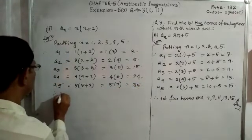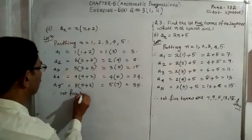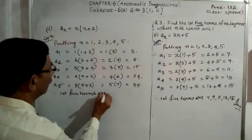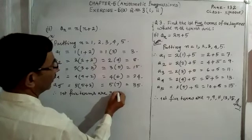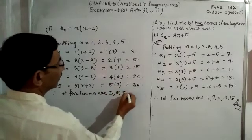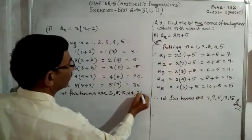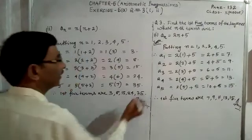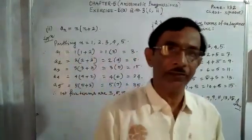Therefore, the first 5 terms are: 3, 8, 15, 24, and 35. That is the end of the sum, and that is the answer. Thank you, my dear students.